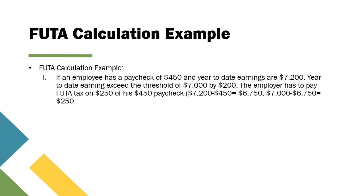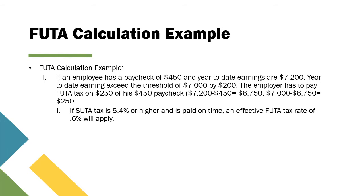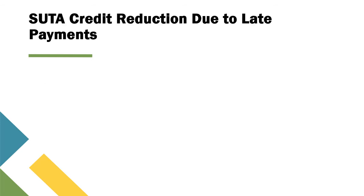In another example, if an employee has a paycheck of $450 and year-to-date earnings of $7,200, those earnings exceed the threshold of $7,000 by $200. The employer pays FUTA tax on only $250 of the $450 paycheck. If SUTA tax is 5.4% or higher and is paid on time, the effective FUTA tax rate of 0.6% applies, making FUTA tax $1.50, which is $250 multiplied by 0.6%.